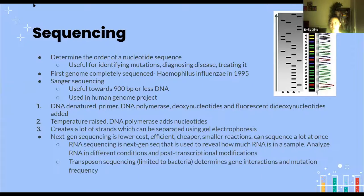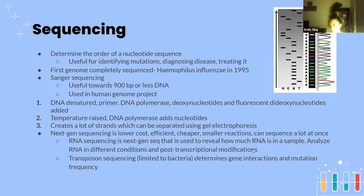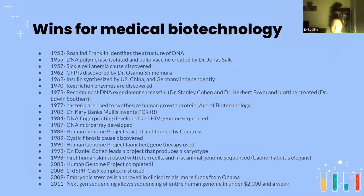The first completely sequenced genome of an organism was Haemophilus influenzae, sequenced in 1995 — a prokaryote. The Human Genome Project was launched in 1990, aiming to sequence the entire human genome — basically all of the genes on its chromosomes. This project took 13 years because Sanger sequencing was used, which is a type of sequencing useful for DNA that is 900 base pairs or less, so it wasn't meant to sequence a genome as huge as the human genome.